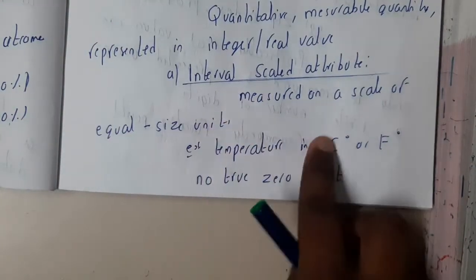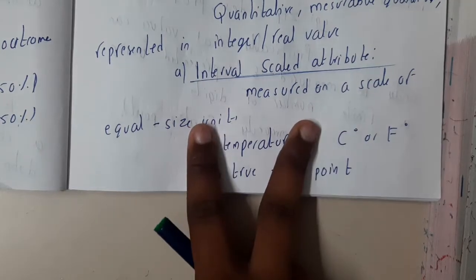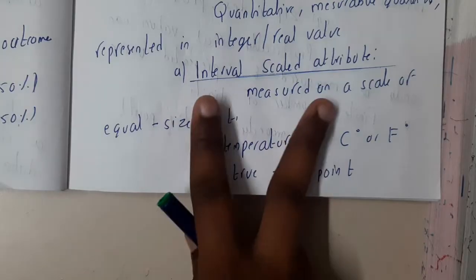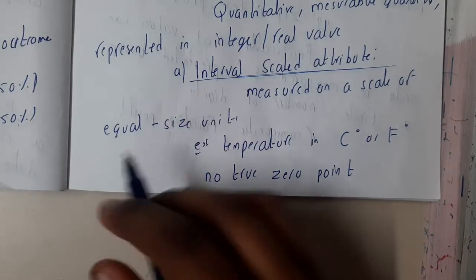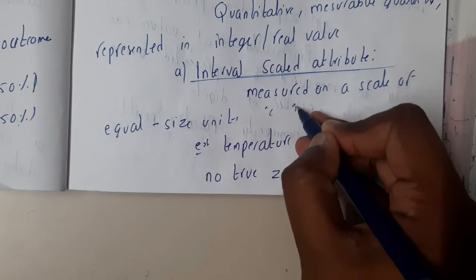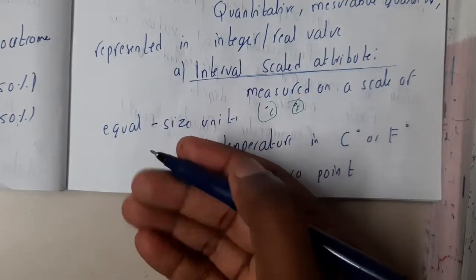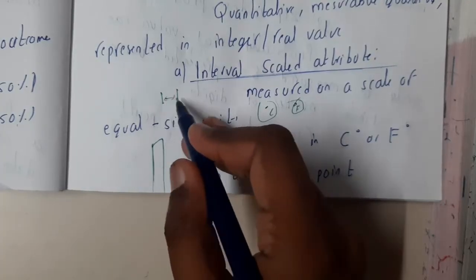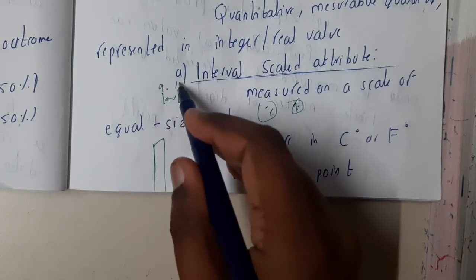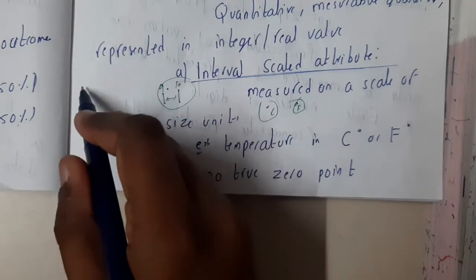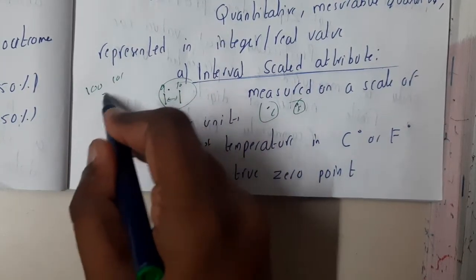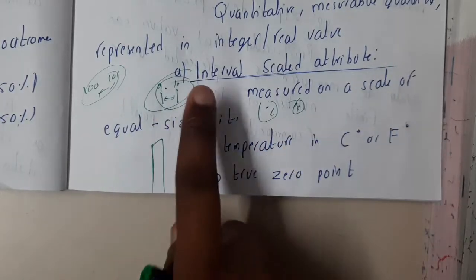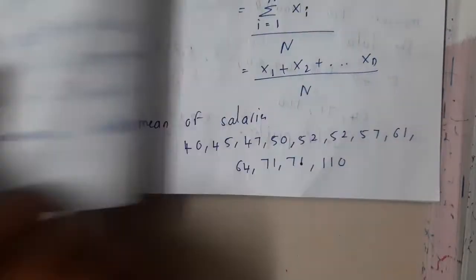For interval scaled attributes, from the name you can say there is some interval, and the length of that interval is the same throughout. For example, temperature scales or a ruler: the difference between 9 cm and 10 cm is one, and similarly from 100 cm to 101 cm is also one. We have equal intervals throughout, so these come under interval scaled attributes.